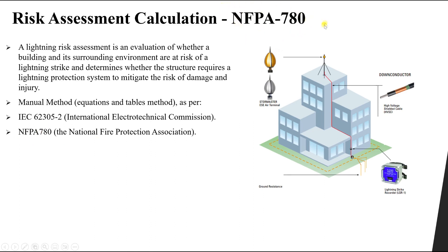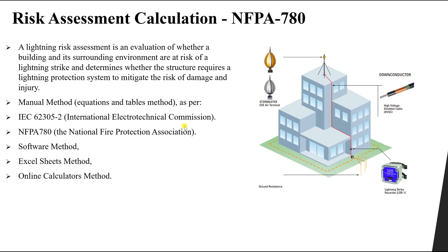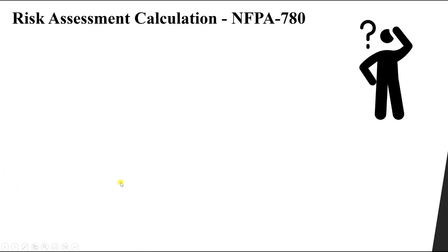In our course, I'm going to use NFPA 780, which is the easier way to get the lightning protection level of a building. In reality, we don't do equations one by one; we use software to get the risk assessment, or Excel sheets, or online calculators. I'll first explain the NFPA 780 method to understand it, then show how to use an Excel sheet and an online calculator by the Shorted company.